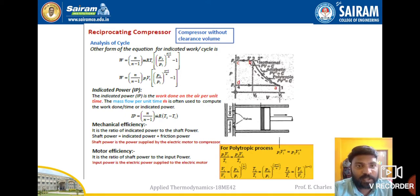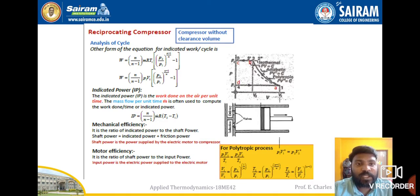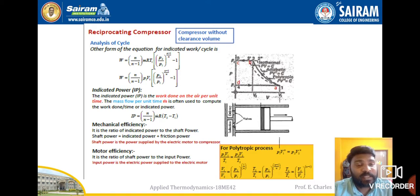The next terminology is mechanical efficiency, which is the ratio of indicated power to shaft power. In an internal combustion engine, mechanical efficiency = BP/IP × 100. But for reciprocating compressors, it is IP/BP × 100. Here shaft power is also called brake power (BP), so mechanical efficiency = IP/BP. This is an important difference between IC engines and reciprocating compressors that students should note.